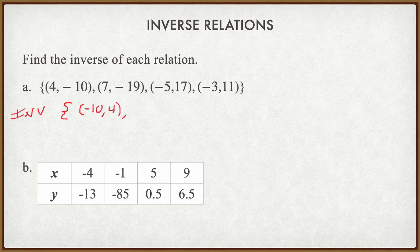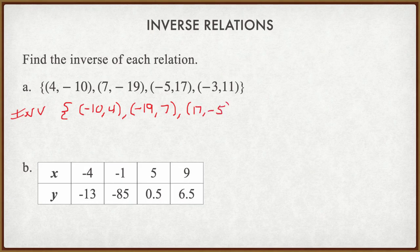We do the same thing with the next ordered pairs. We have (7, -19), we interchange the x and the y, and we get (-19, 7). Then we have (-5, 17), we reverse the pairs and get (17, -5). And we do the same thing with (-3, 11) and get the point (11, -3). So there is my inverse relation — those are the ordered pairs of the inverse of what we started with.